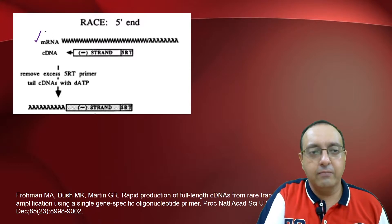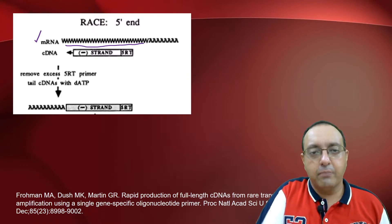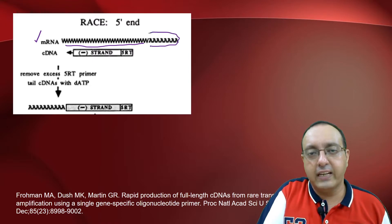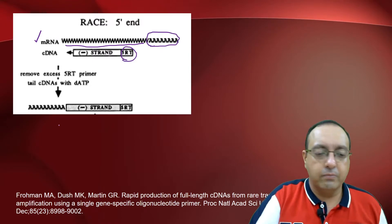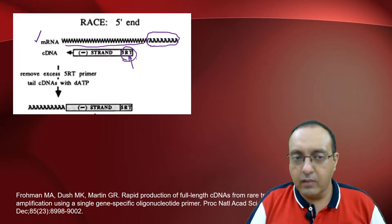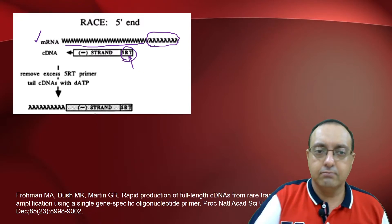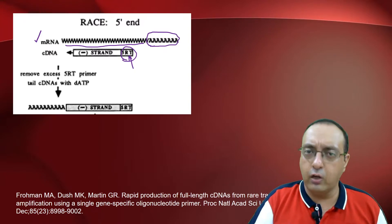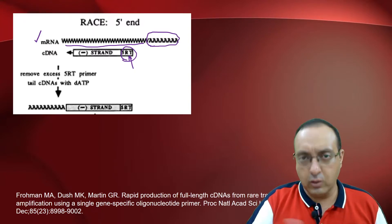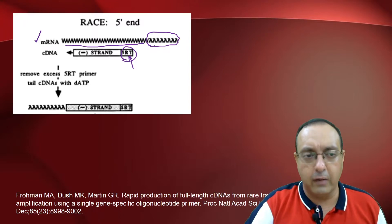Here you have your mRNA. This is the mRNA part along with the poly-A tail. You design a primer. This is called the 5RT for Reverse Transcriptase. And this is close to the 5' end of the mRNA, so that you want to get pretty close to the 5' end.